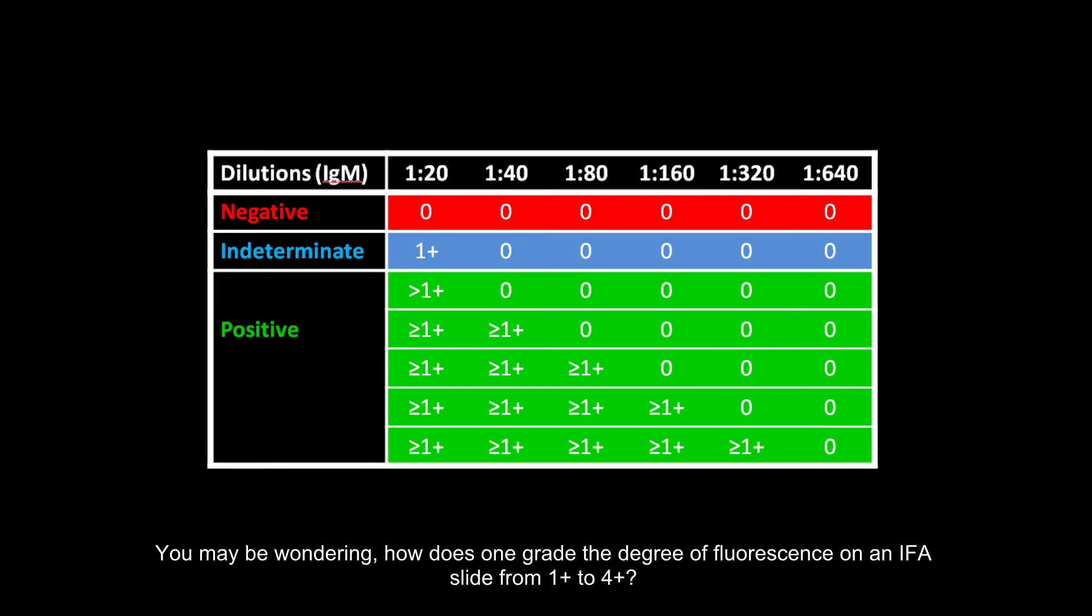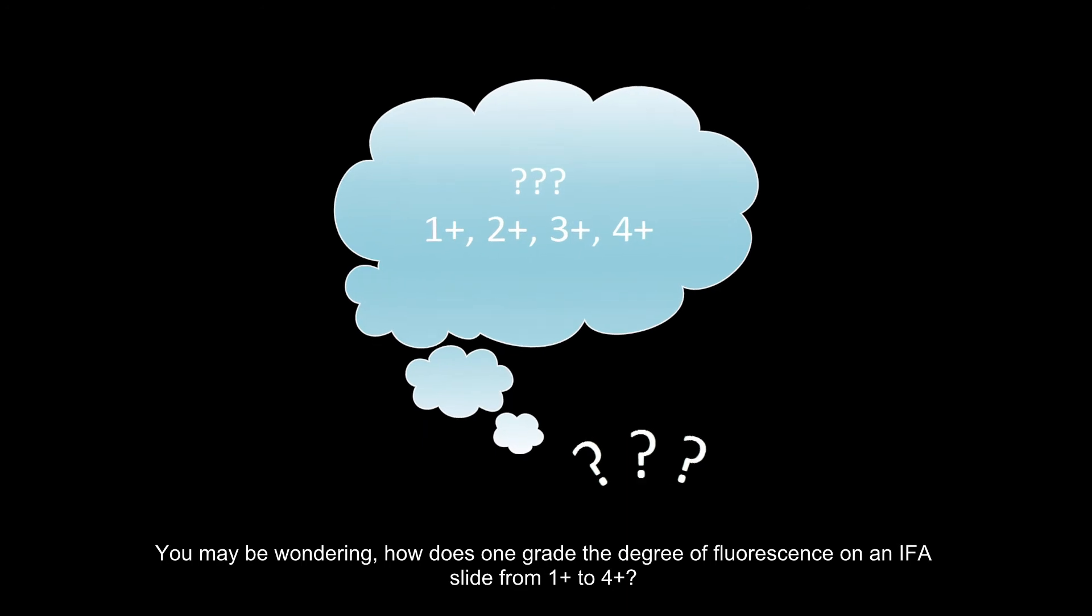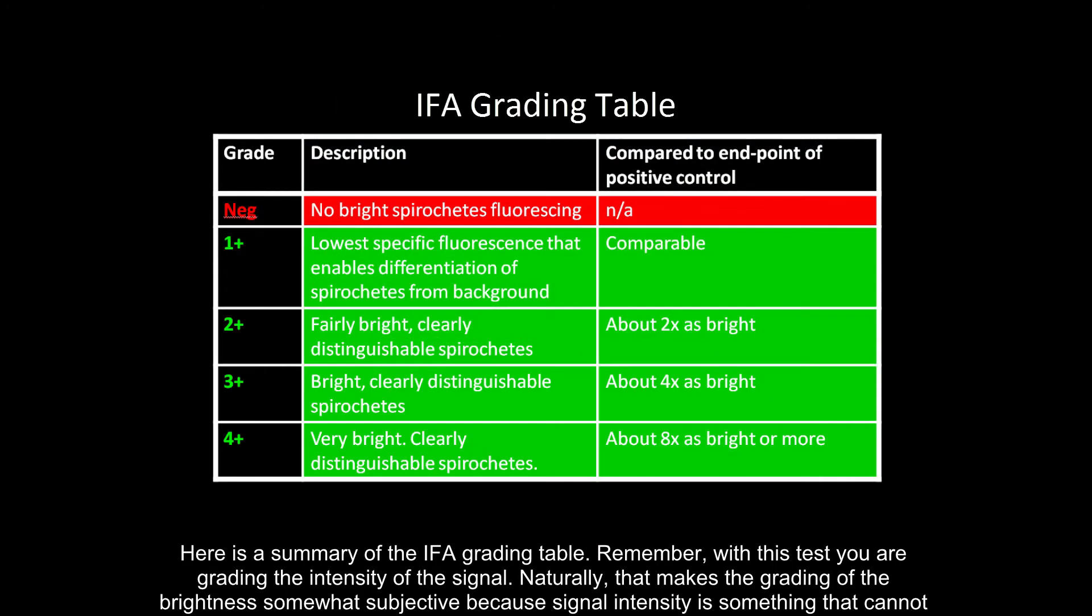You may be wondering, how does one grade the degree of fluorescence on an IFA slide from 1 plus to 4 plus? Here is a summary of the IFA grading table. Remember, with this test, you are grading the intensity of the signal.